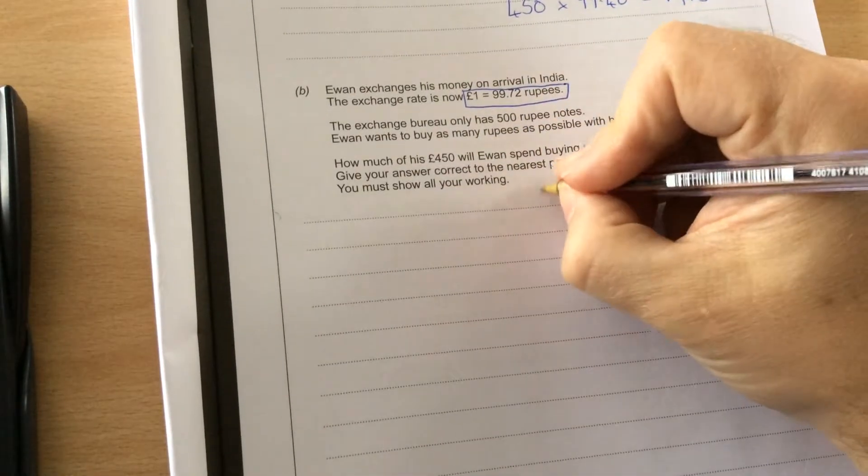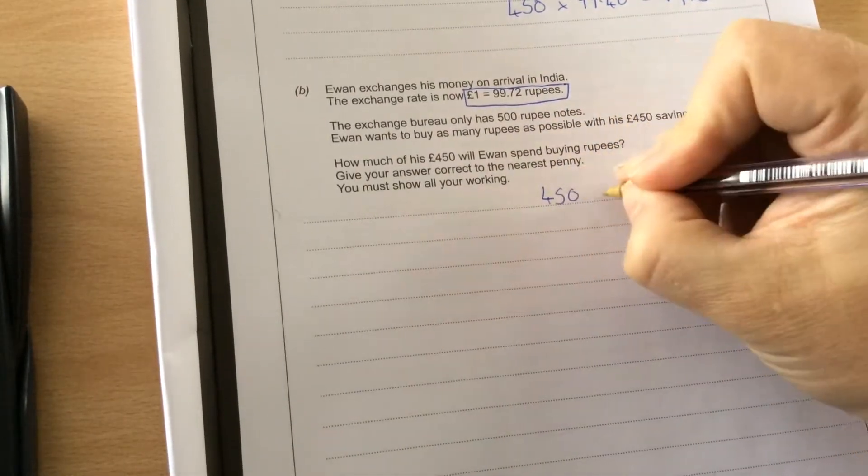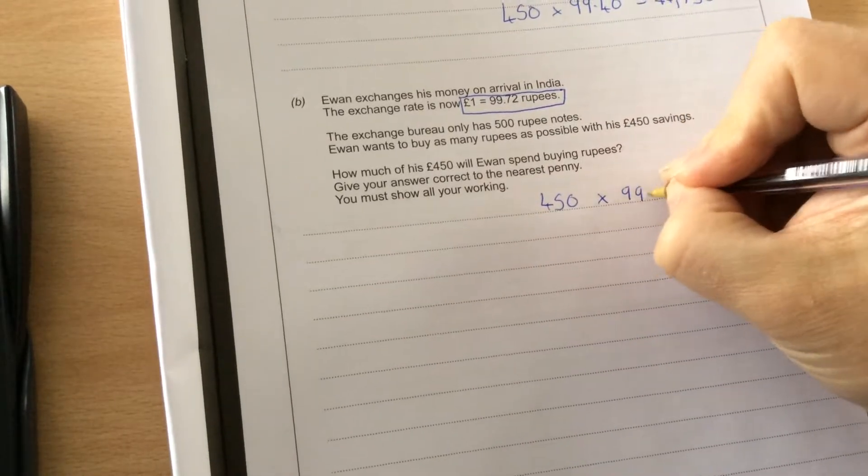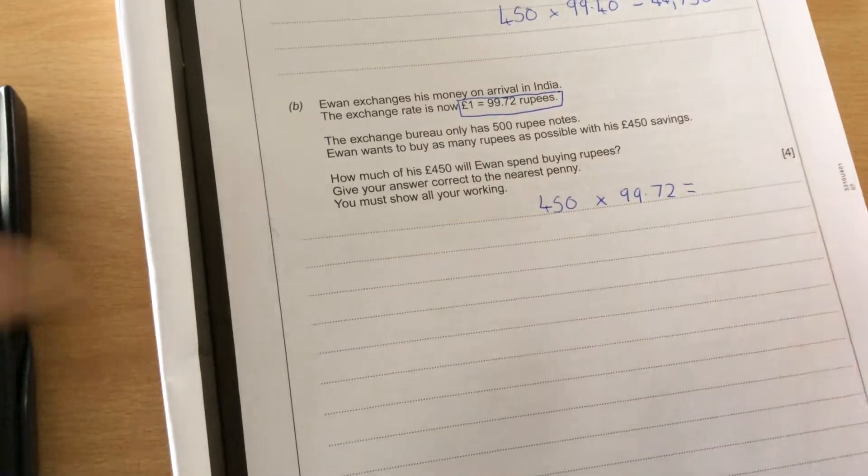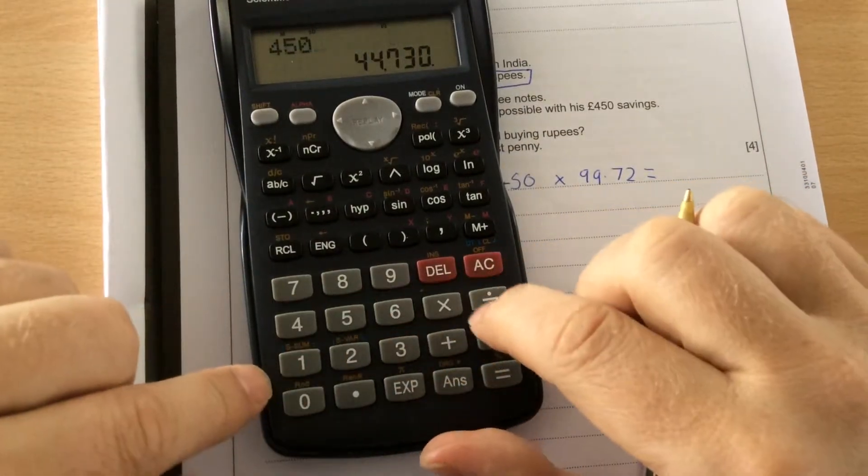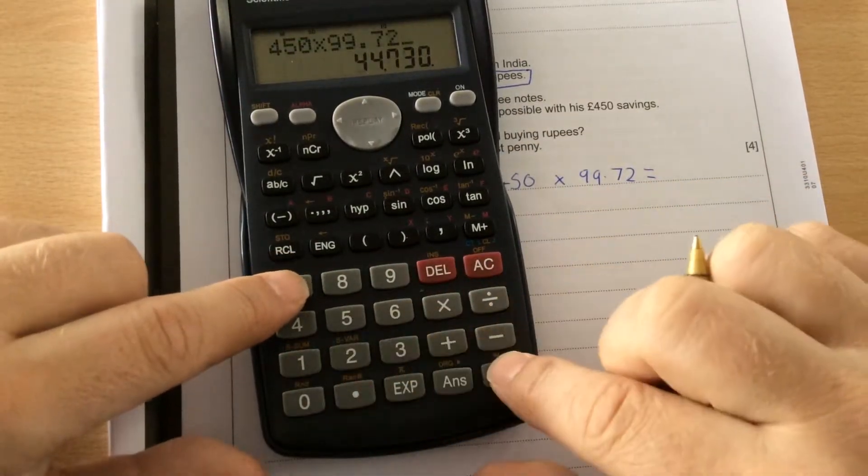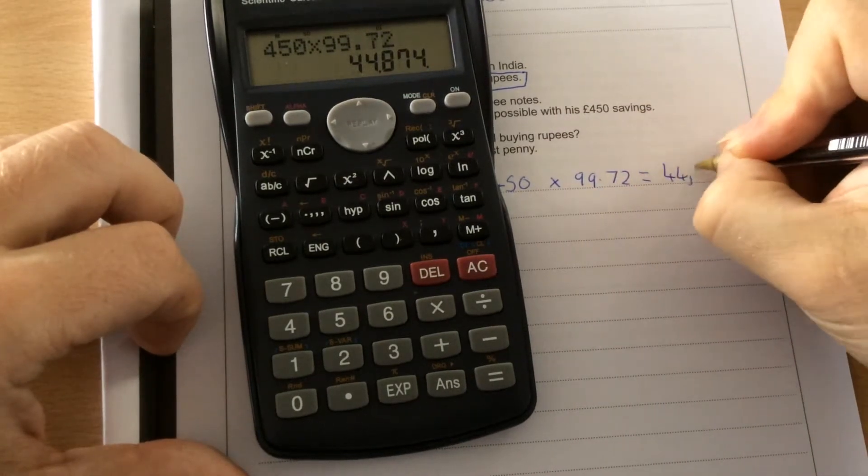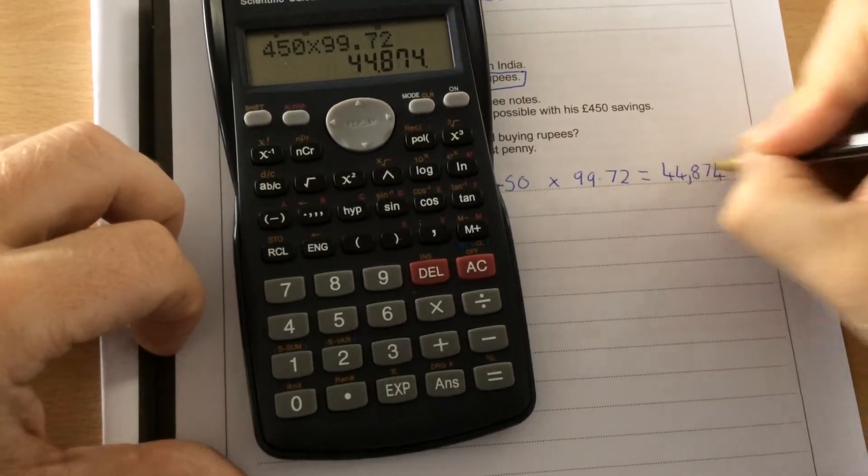So the most he could have now on this new rate is £450 times 99.72. If I'm doing £450 times 99.72, the most he could have is 44,874 rupees.